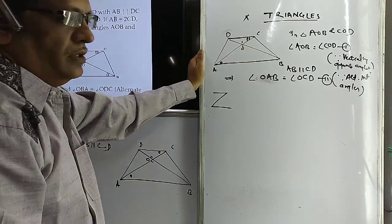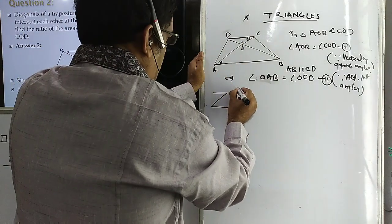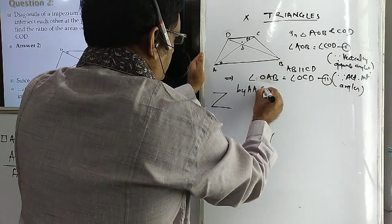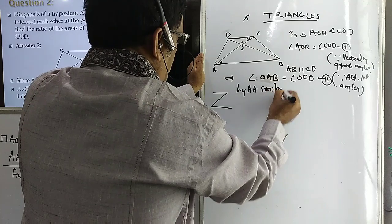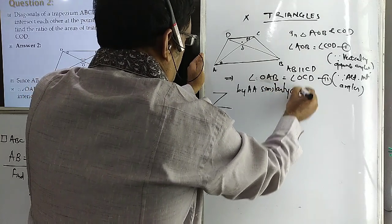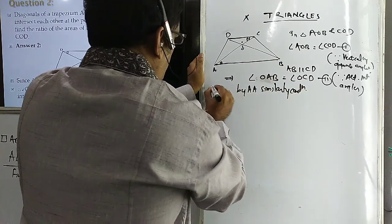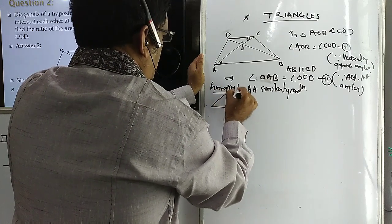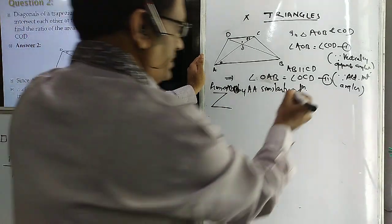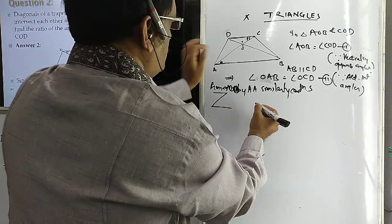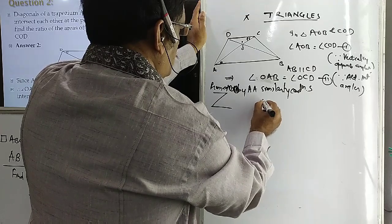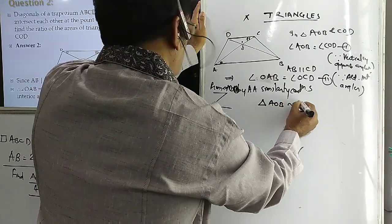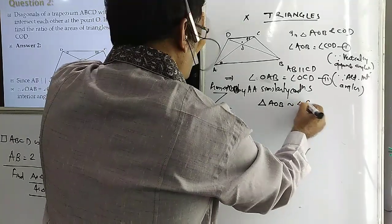Now with these two conditions, by AA similarity condition, from equations 1 and 2, by AA similarity condition, triangle AOB is similar to triangle COD.